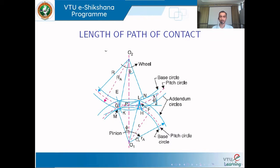The pinion rotates in the clockwise direction, so the wheel rotates in the anti-clockwise direction. The angle made by the normal with respect to a line tangent to the pitch circle and passing through the pitch point gives the pressure angle φ. At the start of engagement, the point is called K, and the end of engagement of both teeth is given by point L. The normal at the point of contact is drawn as MN.